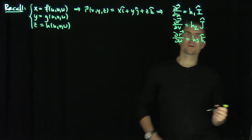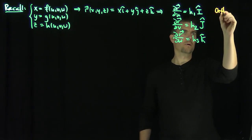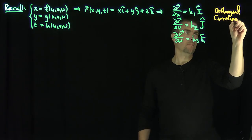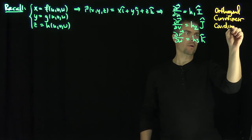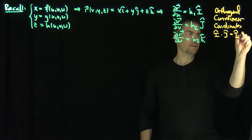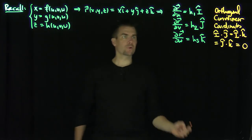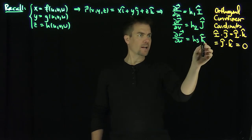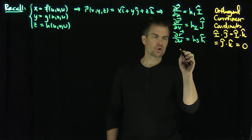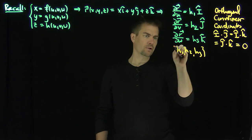These i, j, and k are orthogonal curvilinear coordinates. In this situation, it's the case that i dot j equals i dot k equals j dot k, and they're all equal to zero. It's important to remember that h1, h2, h3, i, j, and k all depend on u, v, and w — they are not constant. These h1, h2, and h3 are called Lamé coefficients.